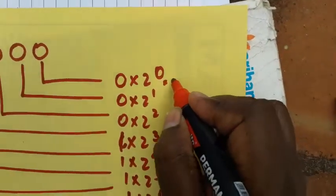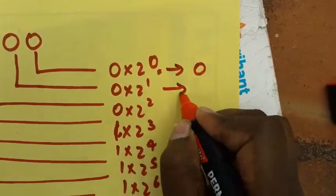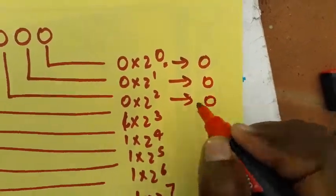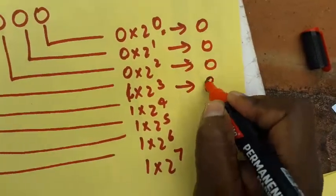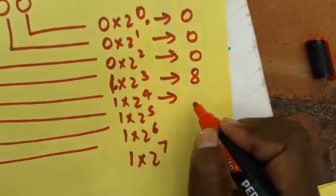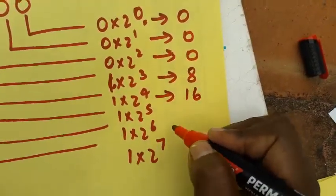So zero into anything we'll get as zero. Zero again, zero. Two into two into two, so here we'll get as eight. Here, two into two into two—that means it's four times two—is sixteen.